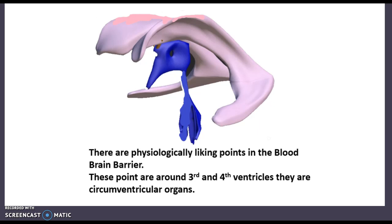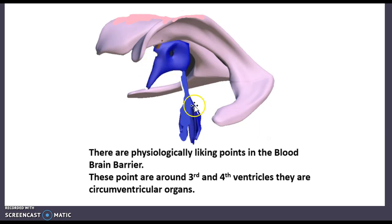In the previous video, we talked about the blood-brain barrier, the different capillaries involved, and tight junctions. This video is going to tackle the physiological landmarks at which the blood-brain barrier is broken. The blood-brain barrier is broken around the third and fourth ventricle.